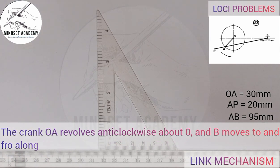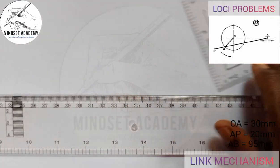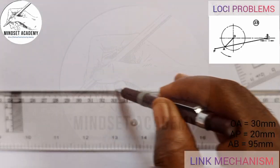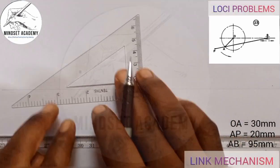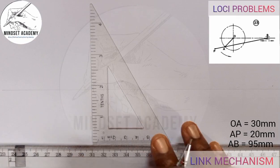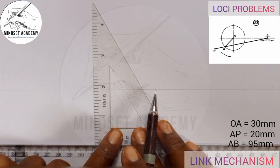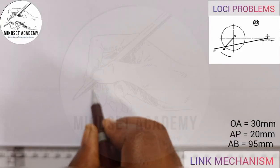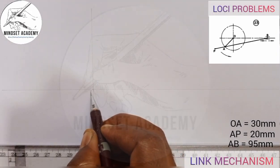To replicate this, the first thing I'll do is draw my horizontal line this way. Then I'll draw the vertical line too. This will be my horizontal and vertical lines. Where they meet will be my center O.